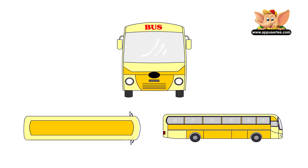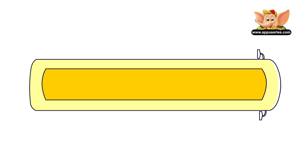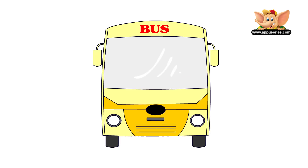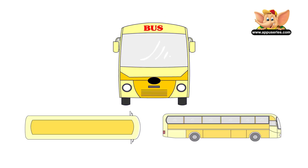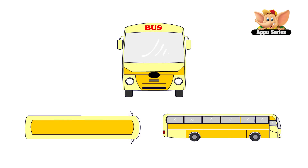Now, here's an image of a bus. You can do the same for the bus — you can look at it from the top, or from the front, or from the side. Do you see how all of them look different from each view?